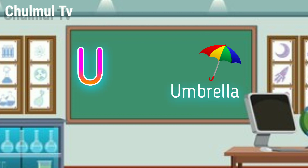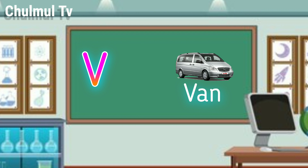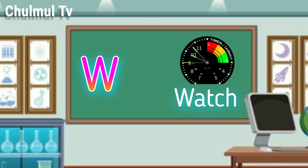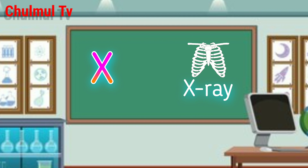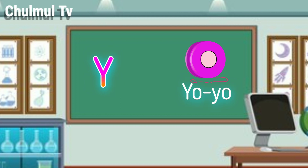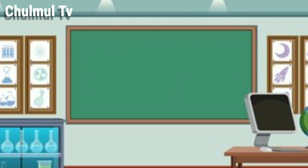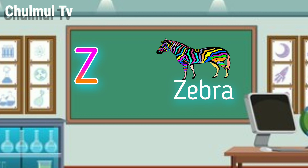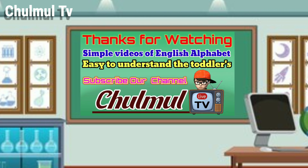U for umbrella, V for van, W for watch, X for X-ray, Y for Yoyo, Z for zebra. All videos of English alphabet.